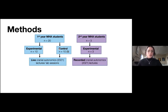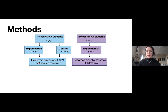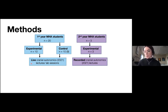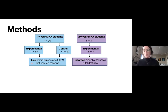The first-year students were given their spring gross anatomy 2021 live cranial autonomics lectures and participated in relevant lab sessions, gaining knowledge of cranial nerve parasympathetics that way. The second-year students had already taken the MHA gross anatomy course the previous spring, so they were given the recorded version of the same lecture to freshen up their cranial autonomics material.